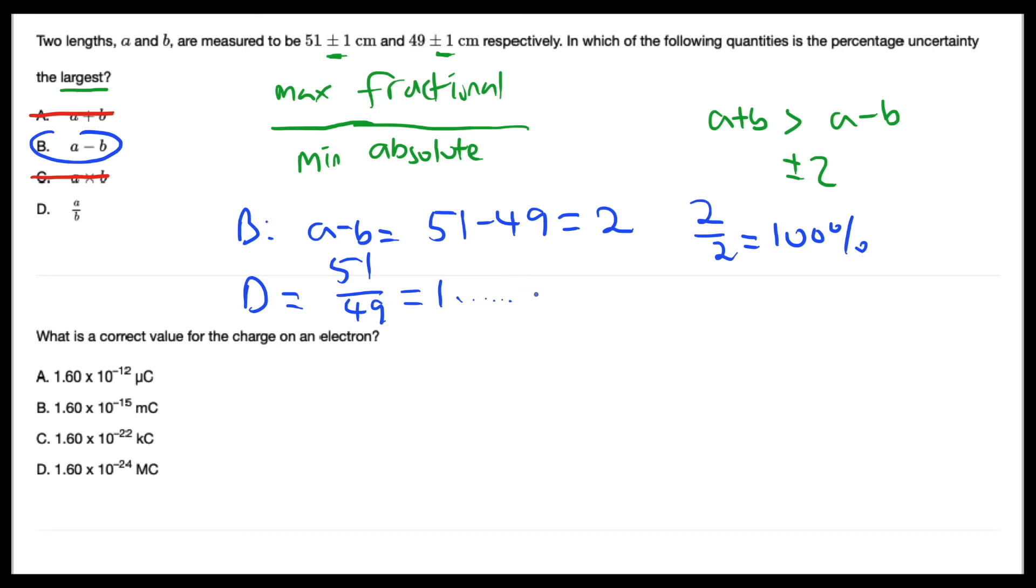You can also check with answer D. So the fractional uncertainty is going to be equal to 1 over 51 plus 1 over 49. I'm just going to do an approximation. So 1 over 50 is equal to 0.02, so 0.04. 0.04 over, let's say this is 1.1 or something. It's definitely less than 100%. So B is the correct answer.